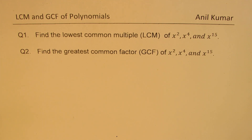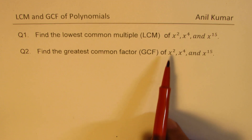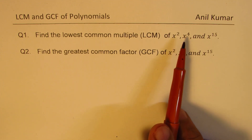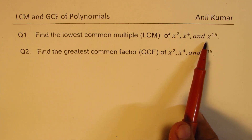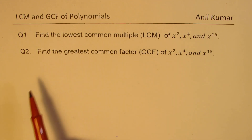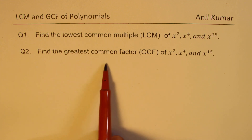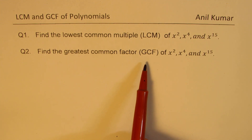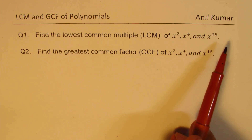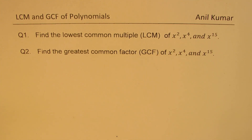I made two questions out of it. Question one is: find the lowest common multiple (LCM) of x squared, x to the power of 4, and x to the power of 15. And question number 2 is: find the greatest common factor of these three polynomials.